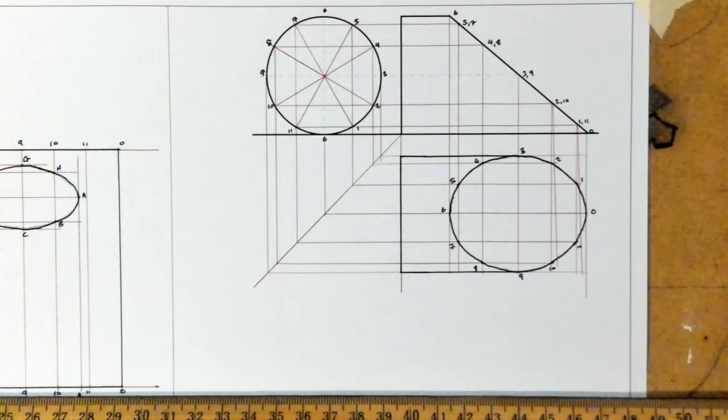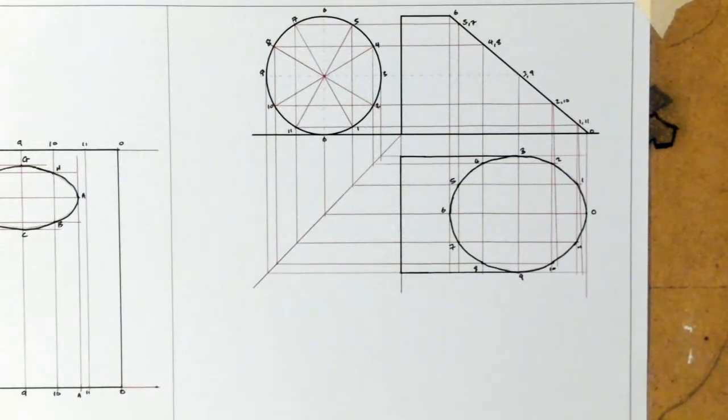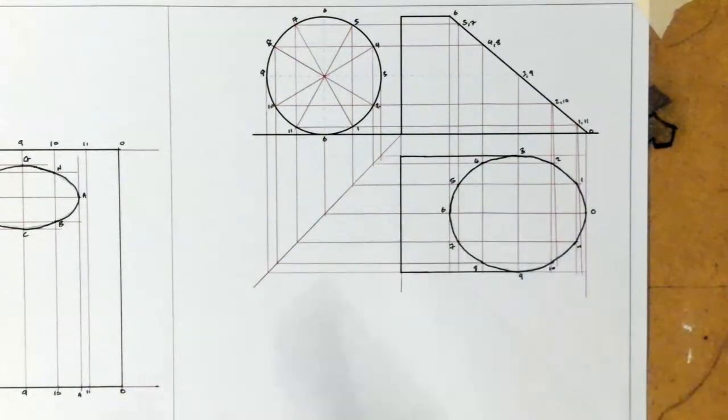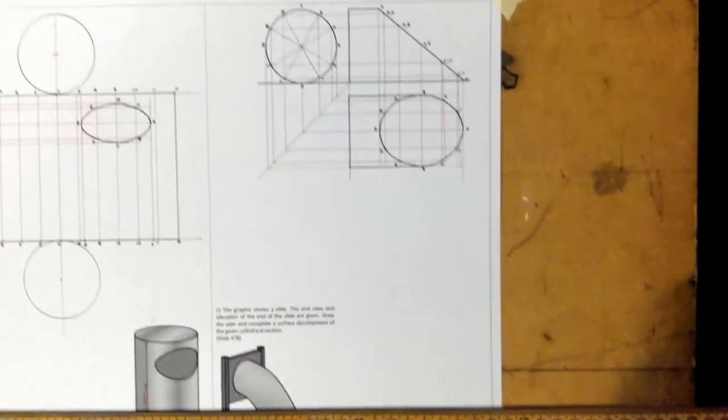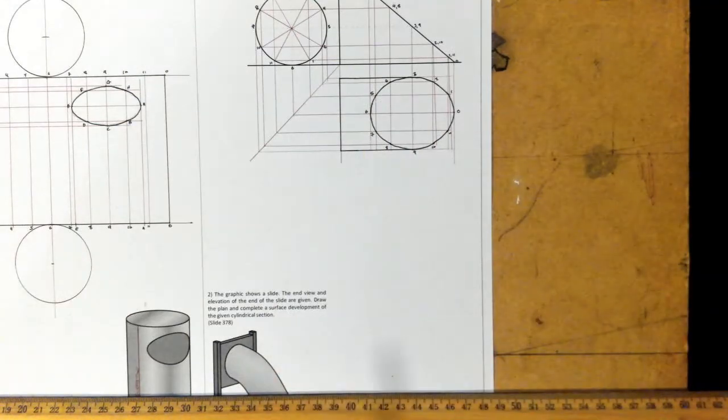Now, for the next part of the question, it says draw the complete surface development of this structure here. So with that, we are going to do, I'll just zoom out there, and the surface development of it is actually going to drop down here.